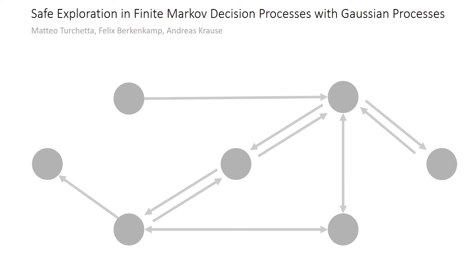We model this safe exploration task as an MDP, where it is initially unknown whether state transitions are safe. To start the exploration, we assume that a small set of safe state transitions is available, here shown in green. Based on these, we can construct a set of safe states amongst which we can move without ever encountering unsafe transitions.